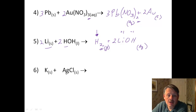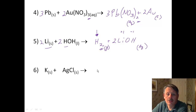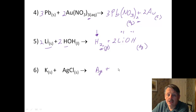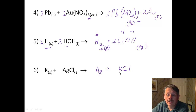Number 6: potassium and silver. Potassium is much higher on the activity series than silver. So we're going to get silver all by itself and potassium chloride. Potassium is +1, chlorine is −1, they cancel each other out. I am already balanced — that's all I've got to do.